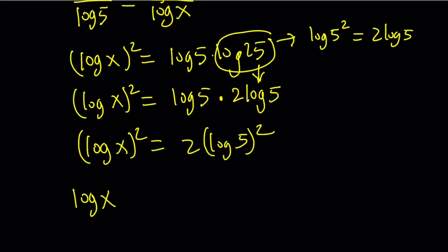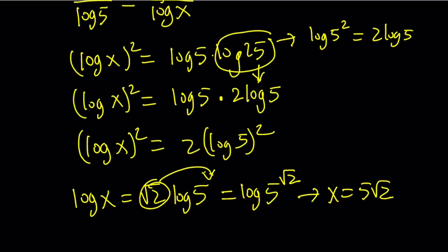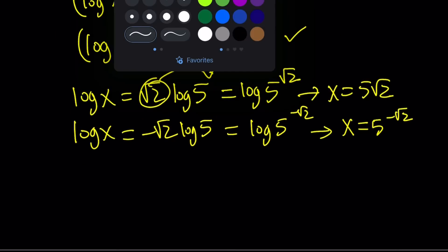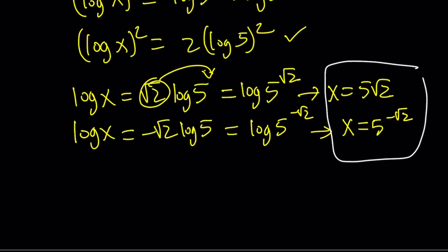From here, either log x is equal to square root of 2 log 5, which can be written as log 5 to the power square root of 2, because this power can be moved back. Power rule works both ways. And now we have log x equals this, so x equals 5 to the power root 2. Or if log x is equal to negative root 2 log 5, we're going to get log 5 to the power of negative root 2. And since logs are equal, that means x equals 5 to the power of negative root 2. As before, we got the same results, just in a different way. So these are the solutions using the second method.